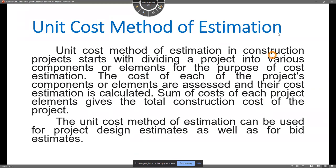What we are to discuss today is all about unit cost derivation and analysis. Let's define the unit cost method of estimation. The unit cost method of estimation is a construction method that starts with dividing a project into various components. We get the unit cost of those components, calculate the total cost of each component, and then sum all those individual components to get the total project cost.